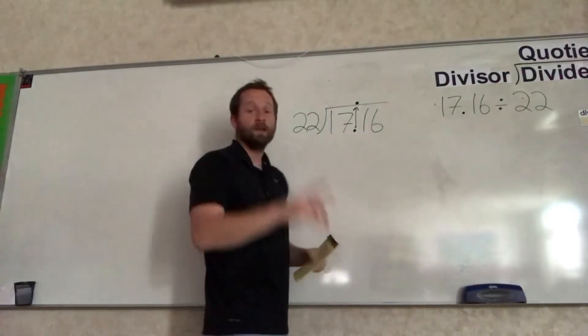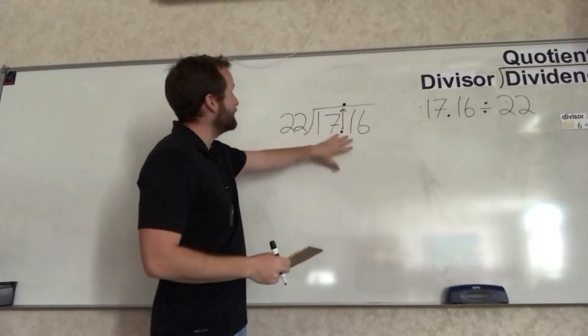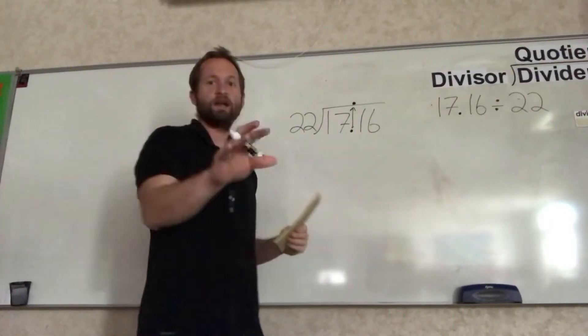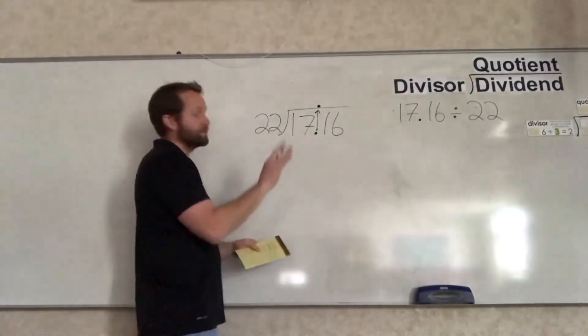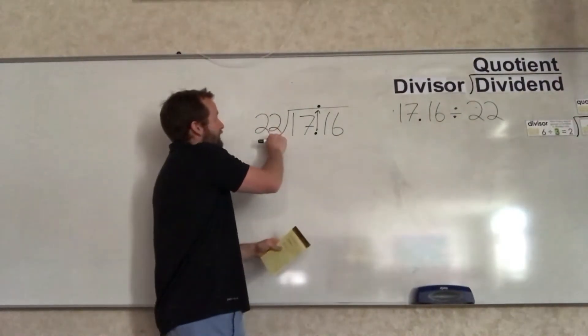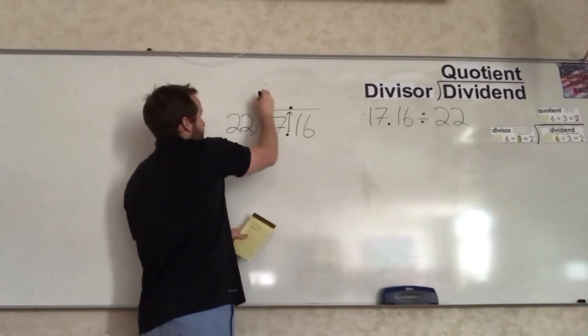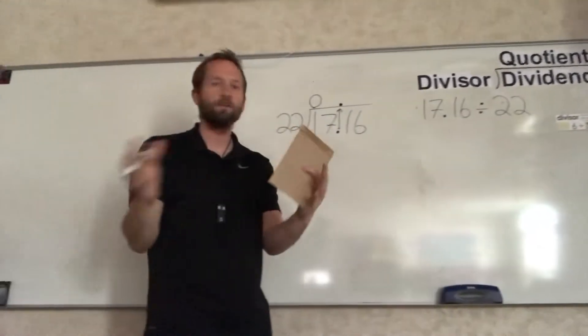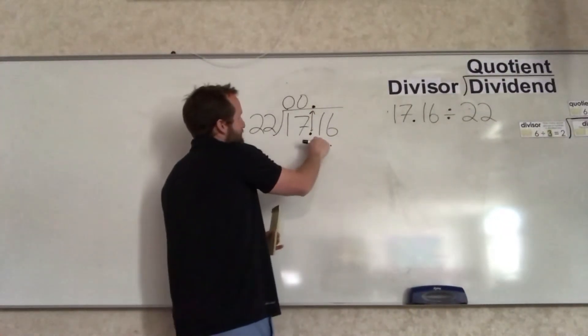Really quick, if you would, pause your video and take a couple minutes on your paper and solve this problem. Now let's go through this together and check and see how we did. Does 22 fit into 1? That would be 0. 22 is too big. How about 17? How many times does 22 fit into 17? Again, it's too big, so it fits in 0 times.